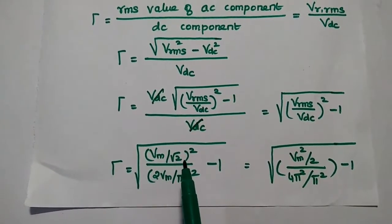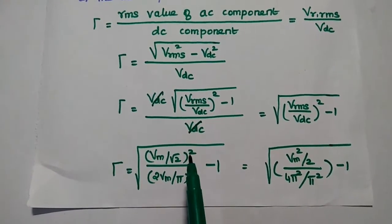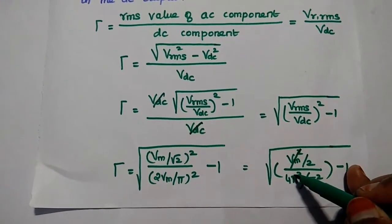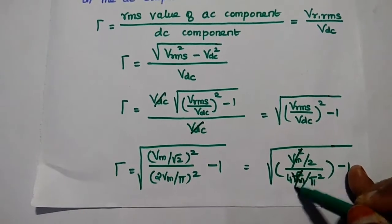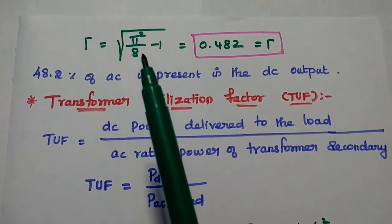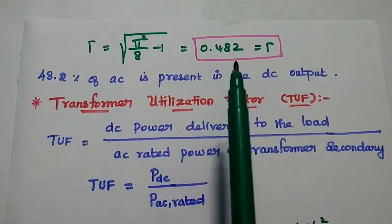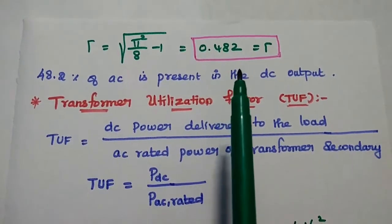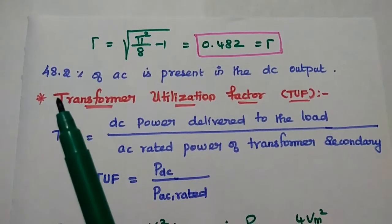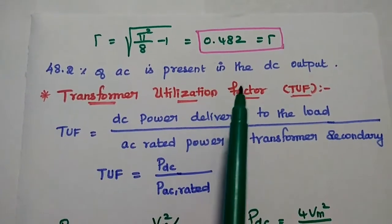With Vrms = Vm/√2 and Vdc = 2Vm/π, squaring both terms and simplifying — Vm² terms cancel — we get square root of (π²/8 − 1), which equals 0.482. So the ripple factor for the bridge rectifier is 0.482, meaning 48.2% AC component is present in the DC output. This value is lower than that of the half wave rectifier.